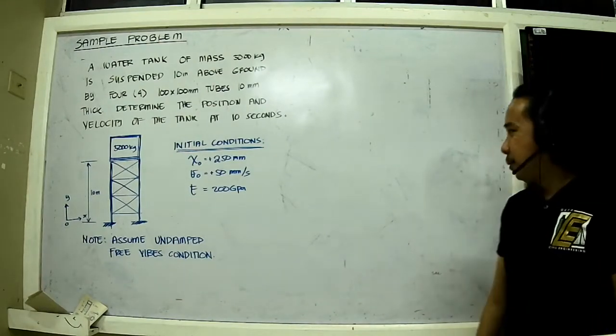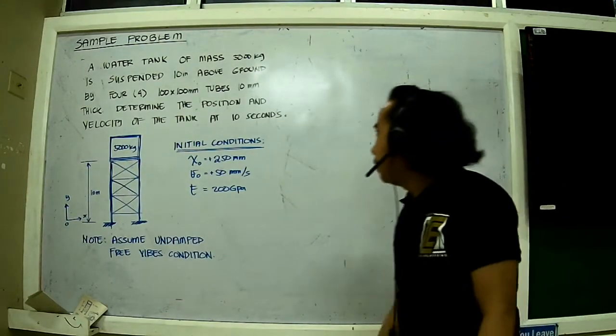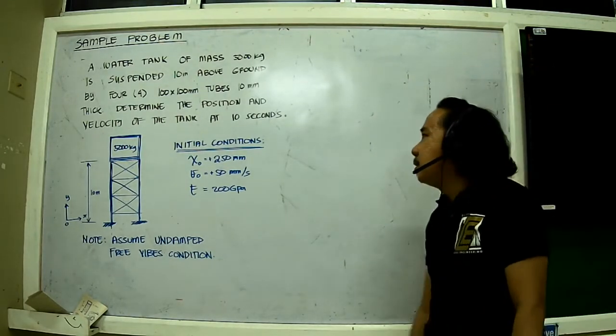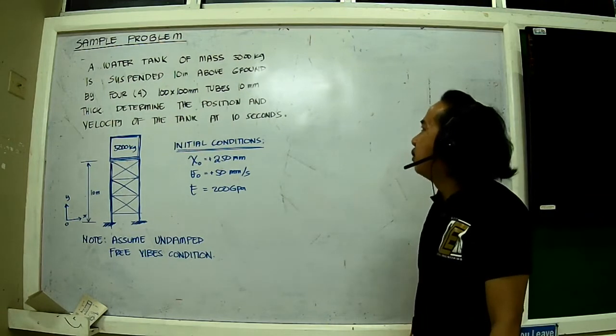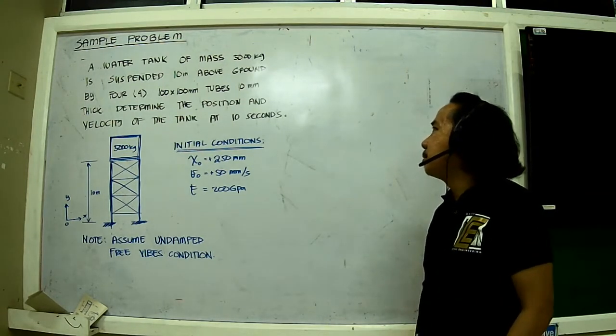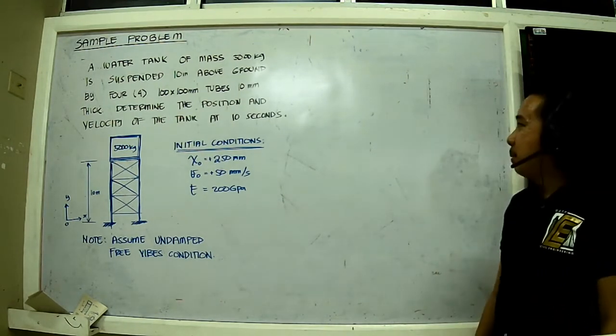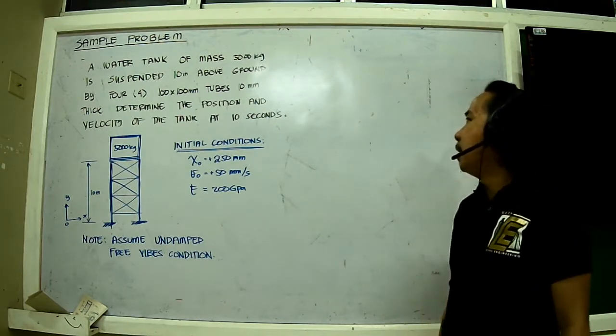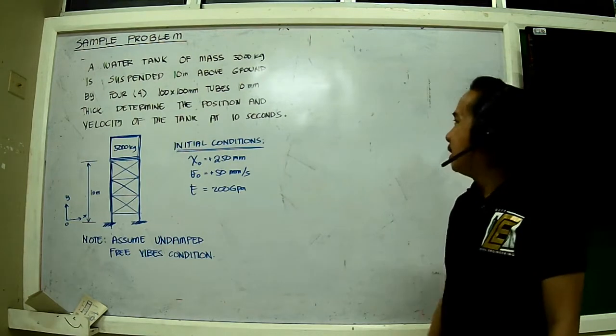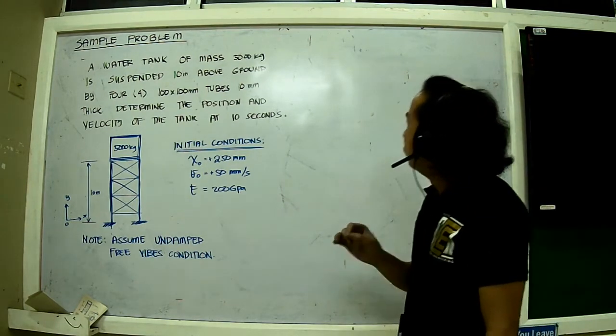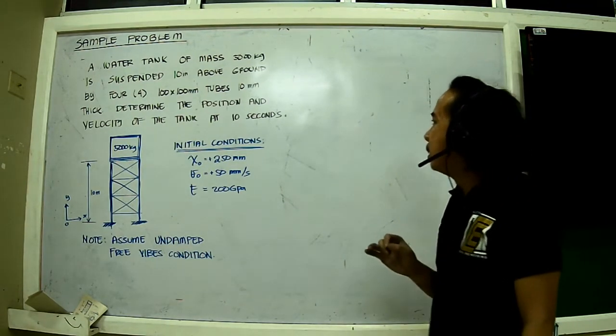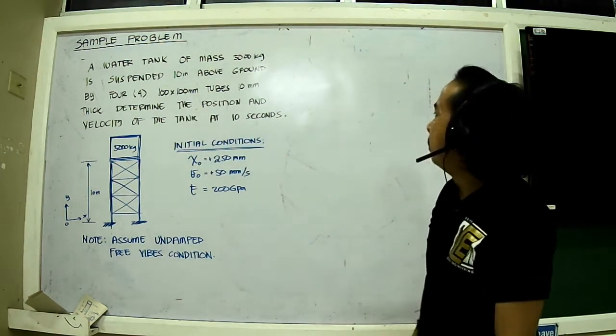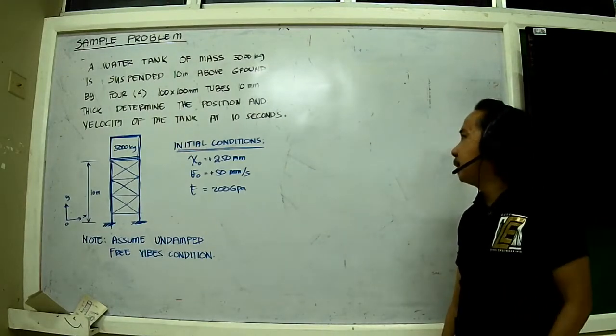Okay, so in this video we'll be solving a sample problem in SDOF systems where a water tank of mass 5,000 kilograms is suspended 10 meters above ground by four 100 by 100 mm tubes, each side with walls 10 mm thick. Note that these are outside diameters. Determine the position and velocity of the tank at 10 seconds.